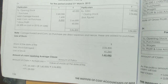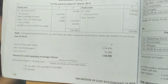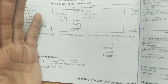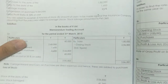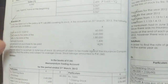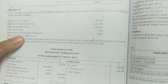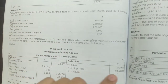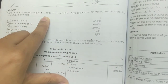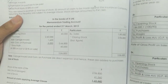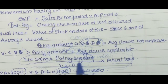Next we check whether the average clause is applicable. We compare the closing stock with the policy amount. The policy amount given is 1,60,000. Closing stock is 2,06,800, which is greater than 1,60,000. Since closing stock exceeds the policy amount, the average clause is applicable.